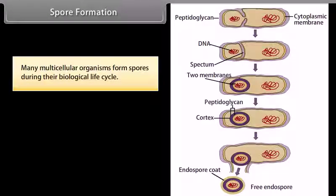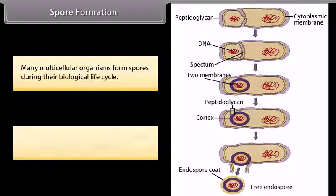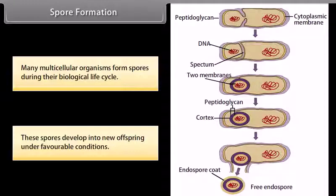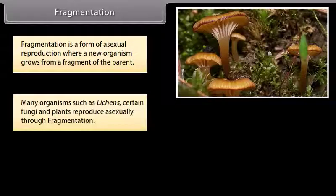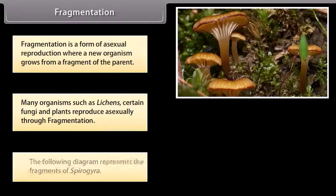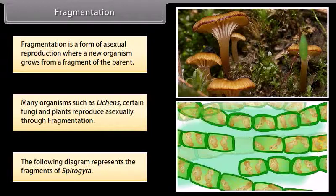Spore formation: many multicellular organisms form spores during their biological life cycle. These spores develop into new offspring under favorable conditions. Fragmentation is a form of asexual reproduction where a new organism grows from a fragment of the parent. Many organisms such as lichens, certain fungi and plants reproduce asexually through fragmentation. The following diagram represents the fragments of Spirogyra.